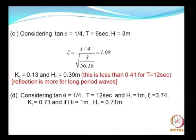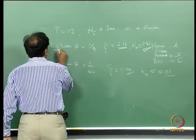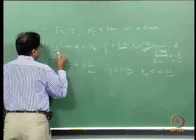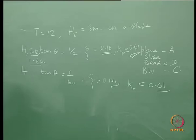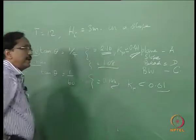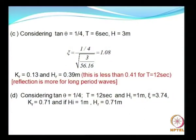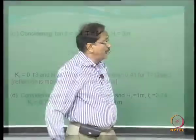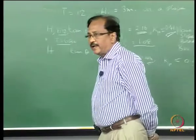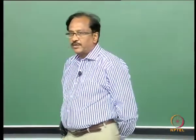Now let us consider T = 6 seconds with all other parameters the same — same slope, same wave height of 3 meters. The surf similarity parameter works out to 1.08. Using the earlier nomogram, the reflection coefficient is approximately 0.13. This clearly conveys that for a long period wave, the reflection coefficient is higher.